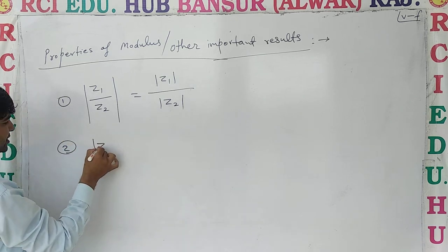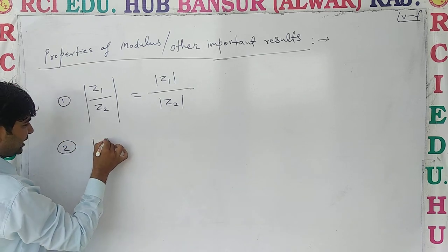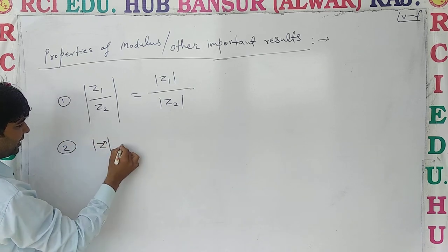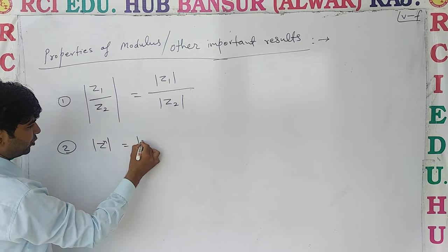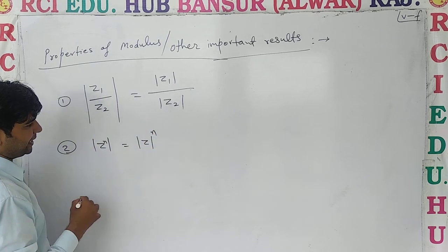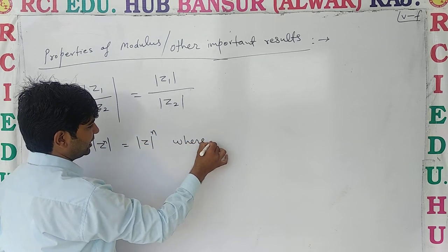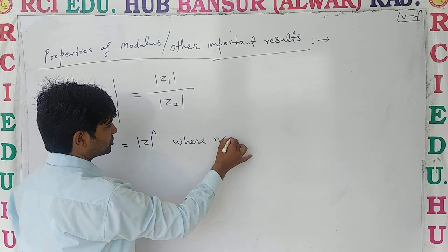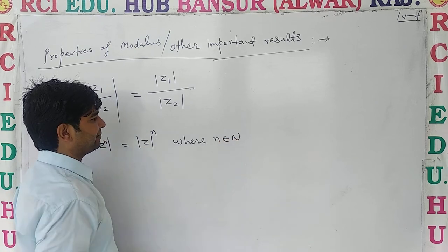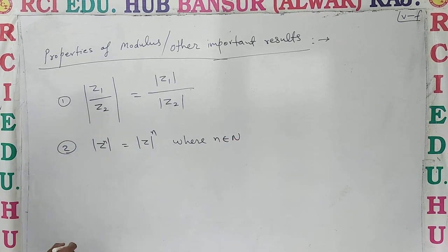दूसरा: Z के अंदर अगर Power N है, तो आप Mod Z की Power N लिखोगे। यहां N belongs to Capital N, यानी N एक Natural Number है।